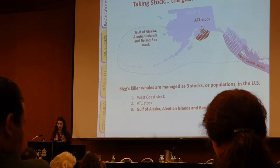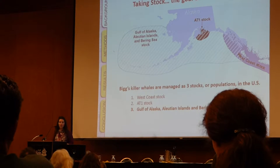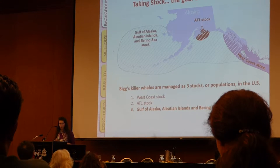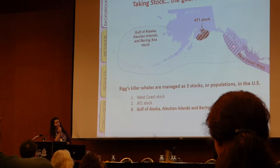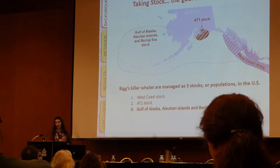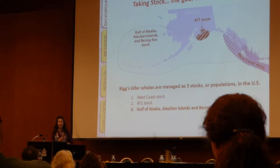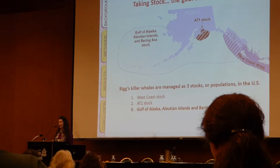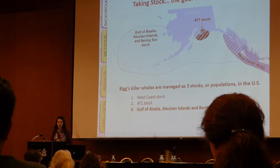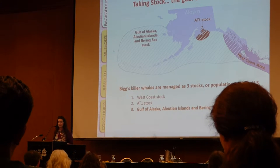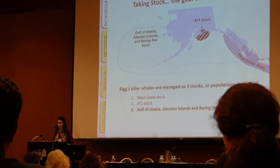Killer whales are managed by NOAA Fisheries. For the Biggs killer whale ecotype, there are three recognized stocks. The first is the West Coast Stock, ranging from southeast Alaska down to the coast of California. Second is the AT1 Stock, a small population in Prince William Sound. The third is the Gulf of Alaska, Aleutian Islands, and Bering Sea Stock — which I'll refer to as the GAB Stock — covering the rest of killer whales found in western Alaska. There simply isn't enough information at this point to refine stock structure further out here.